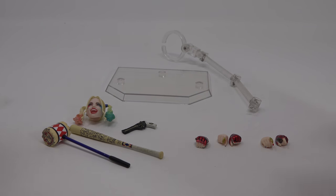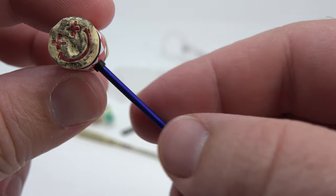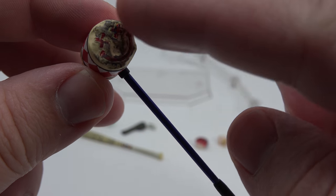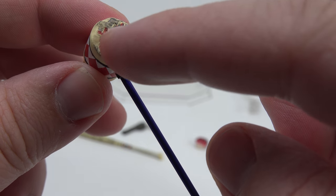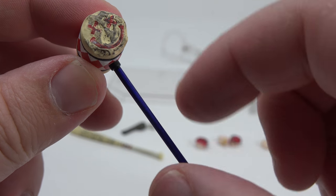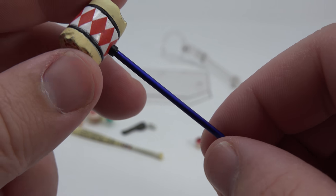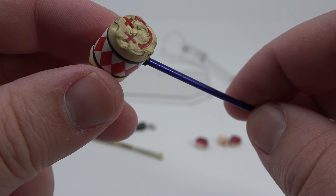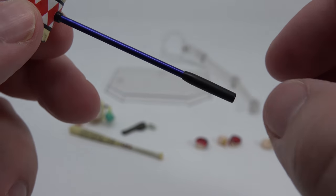Alright guys we're back and here's a look at all the accessories you get with Harley here. Get the mallet here. I think it looks really great, really nice detail in there, in between the chopped up wood grain and stuff and the smiley face on it. Really nice paint detail. Looking good.